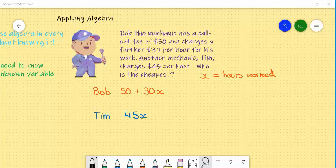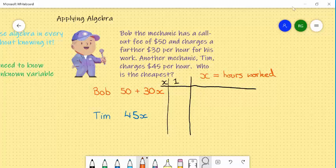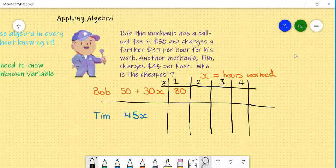Now in order to solve who we should actually go with, we can draw up a table as one scenario. Because we can think if he comes for one hour, if x is one. If we were to substitute the value of x being one into Bob's equation, we're going to get $50 plus $30, which is going to be $80. If it was two hours, it would be $110. Three hours, $140, and it's going up obviously by $30 per hour.